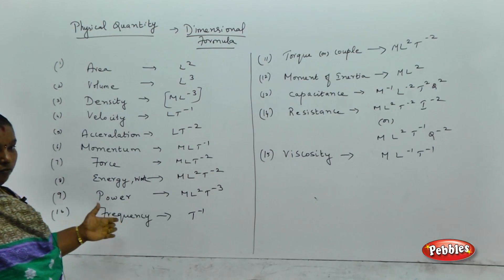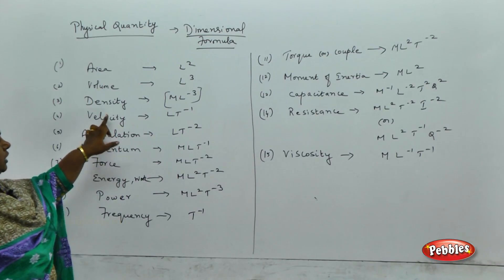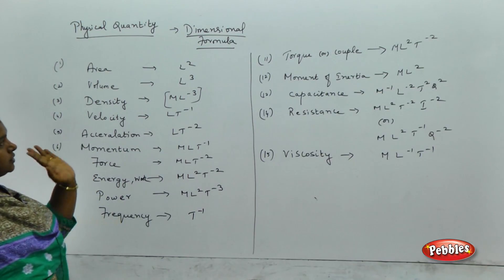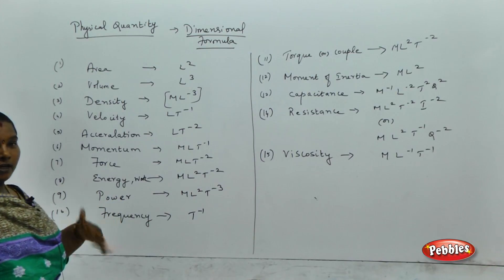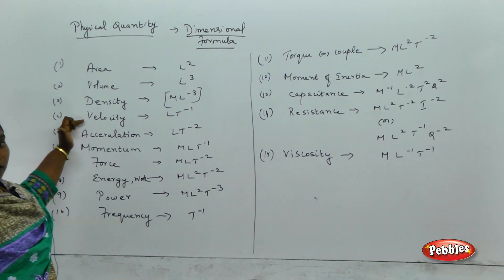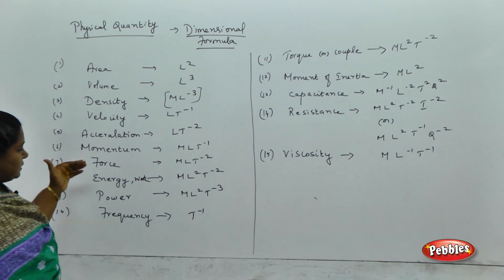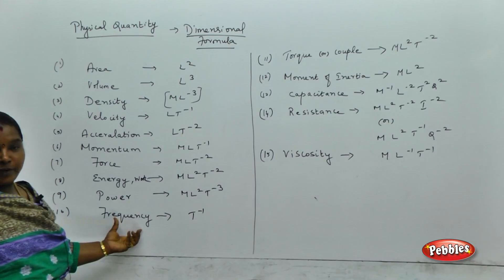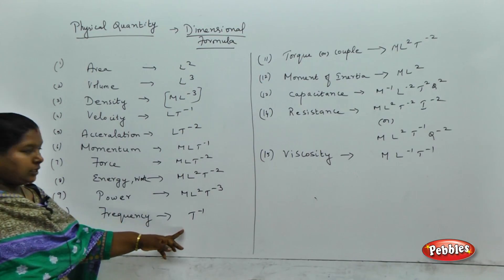I list out the various physical parameters and their dimensions. Velocity, mass, volume, and area are already discussed. Area and volume are simple — by formula, area is L squared and volume is L cubed. Density is mass by volume, giving M L minus 3. Velocity is rate of change of displacement, L divided by T. Frequency is 1 by T, so its dimension is T minus 1.